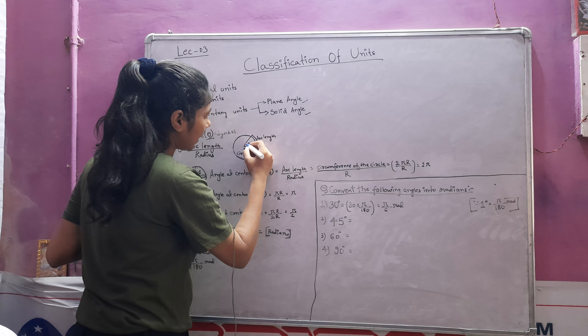Now here are some practice questions to find radians from angles. If we want to find 30 degrees in radians, we multiply 30 by π/180. We use π/180 because 1 degree equals π/180 radians. Cancelling out, we get π/6 radians.